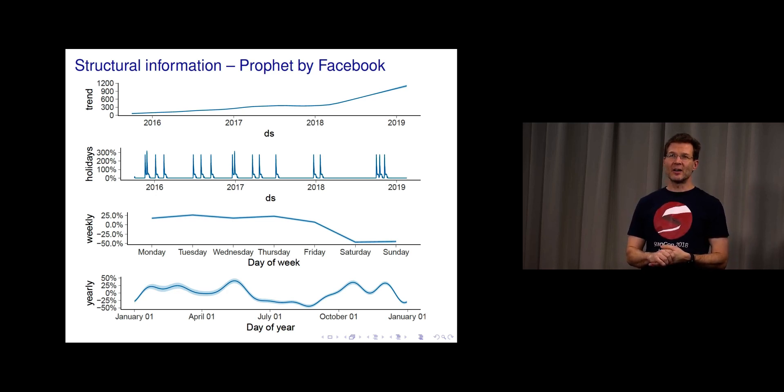This model was made with Prophet software package, which is built on top of Stan. There's a trend showing more downloads per day over the years. There's holidays, actually release dates when users download more quickly. There's a weekly pattern with less downloads during weekends, and a yearly pattern reflecting holidays and academic teaching terms as RStan is used a lot in teaching.